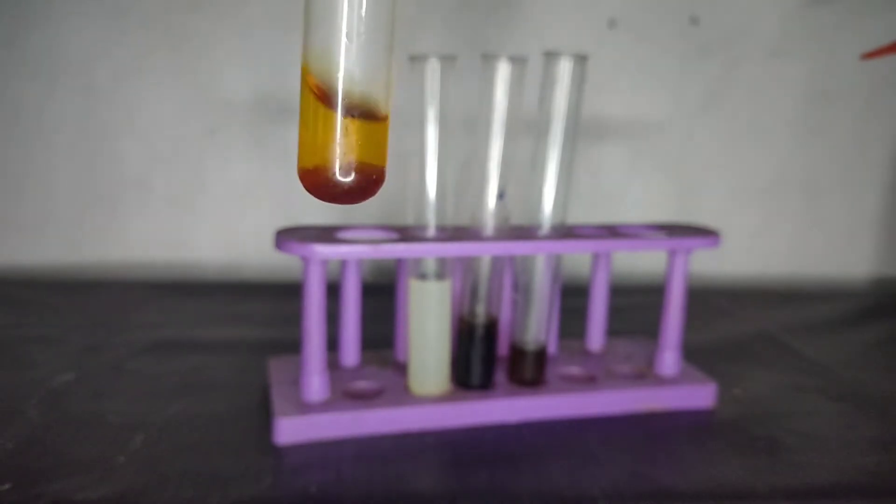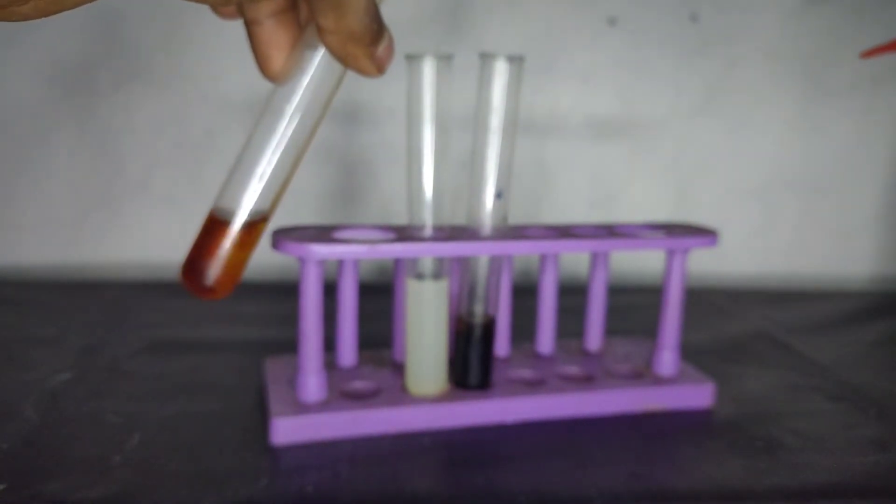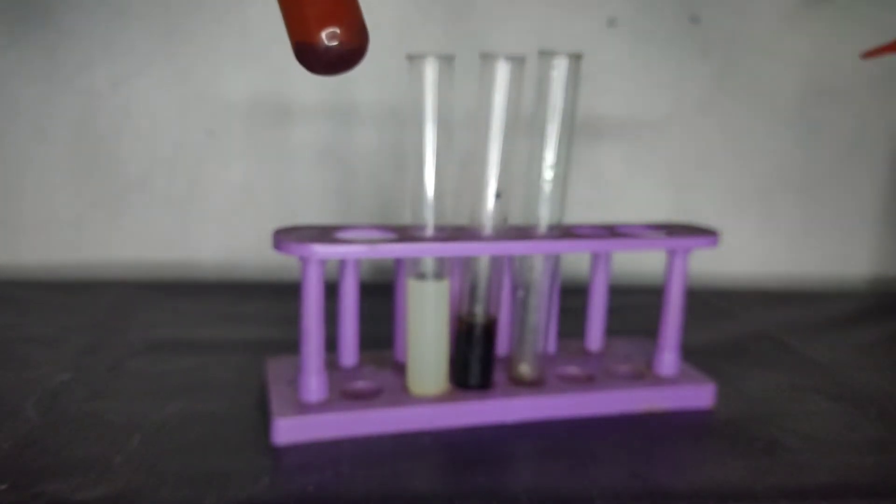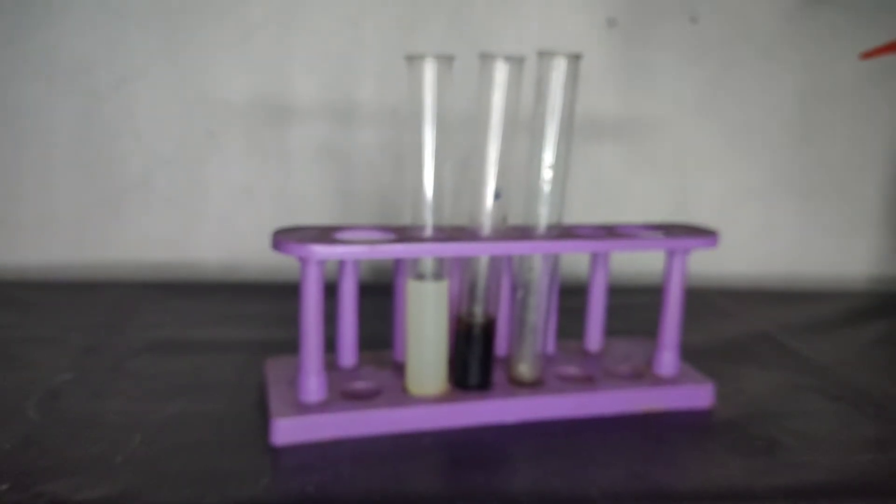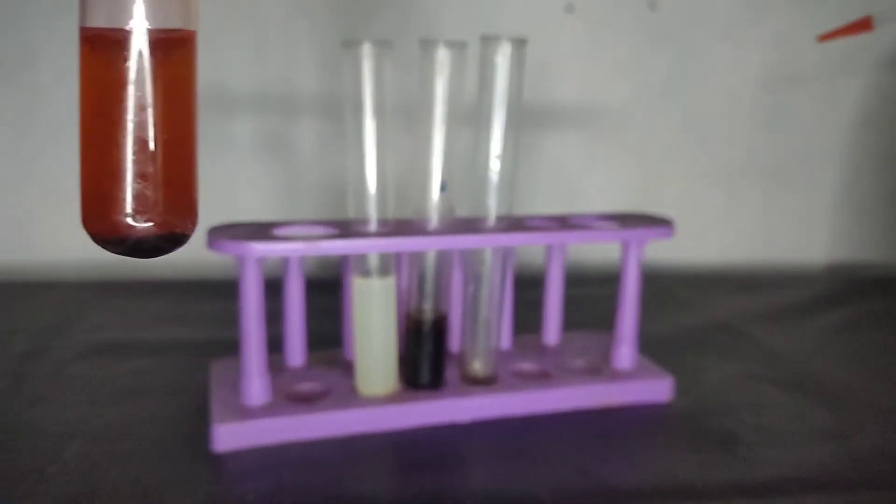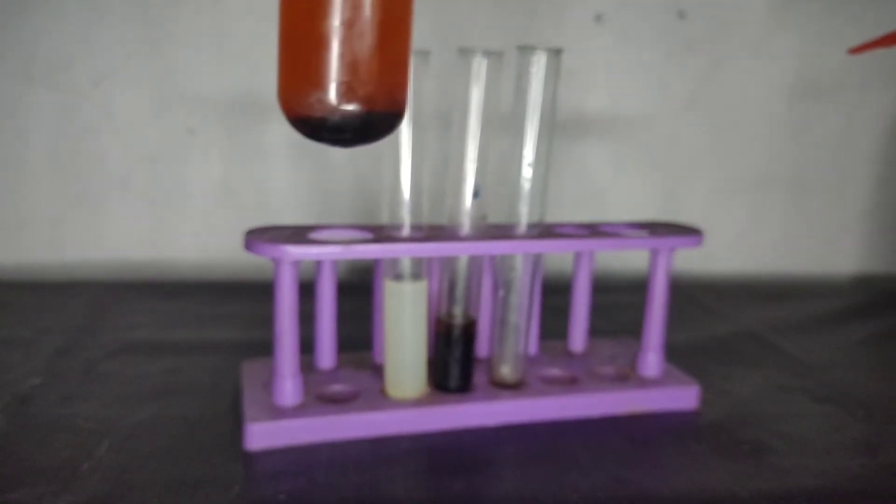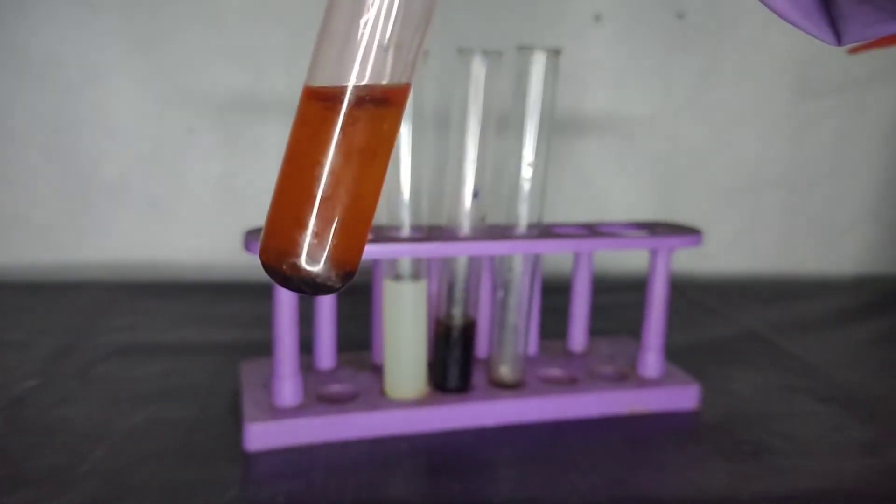If you add more chlorine water, let's add chlorine water in excess. Now give it a shake. Now you can see that the organic layer is so dark that you can't even see the color. But it's violet in color.